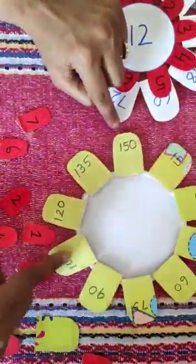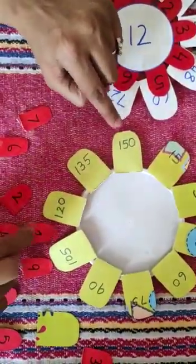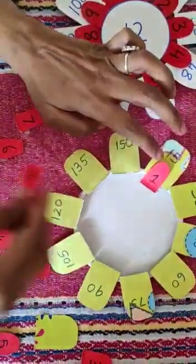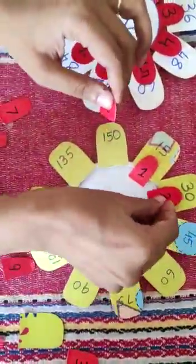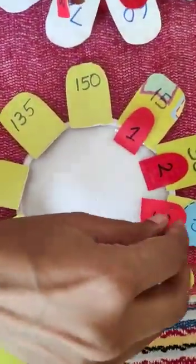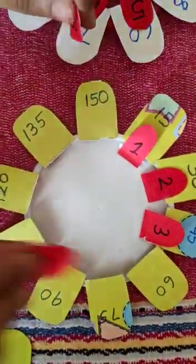You can see that I have stuck all the petals. The inner petals. 15, 1, then 2, 3, 4.